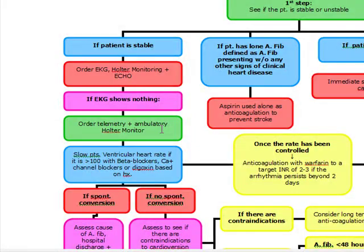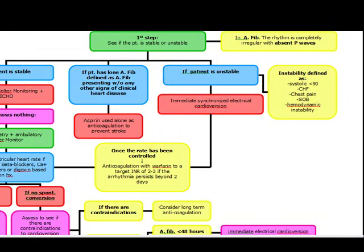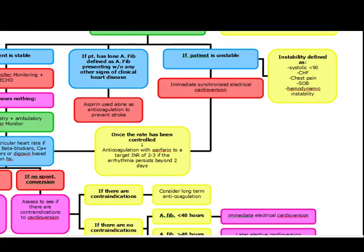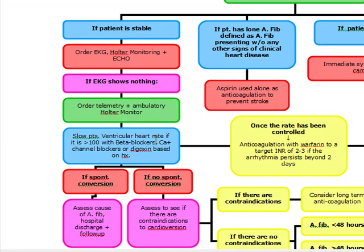We want to slow the patient to a ventricular heart rate if it's over 100, using beta blockers, calcium channel blockers, or second line, digoxin — depending on the history. Calcium channel blockers are usually our first line, but if the patient is asthmatic, for example, our first line becomes a beta blocker. So based on the history, we're going to use either beta blockers, calcium channel blockers, or digoxin.